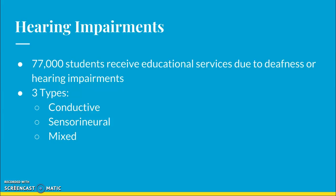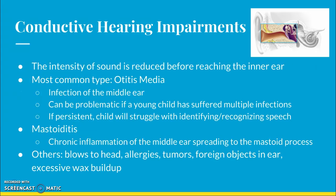The three major types of hearing impairments we're going to talk about are conductive, sensorineural, and mixed hearing impairments. The first type is conductive hearing impairment, where the intensity of sound is reduced before reaching the inner ear. The most common cause is otitis media, which is an infection of the middle ear. This can be really problematic for a young child who suffers constant ear infections, as the student will start to struggle identifying and recognizing speech over time.